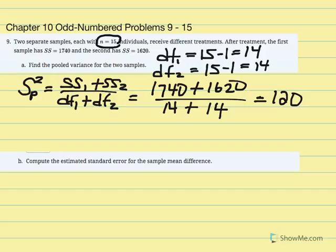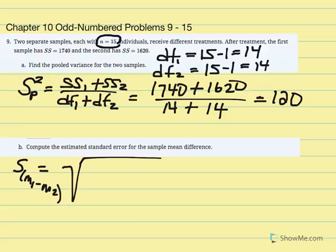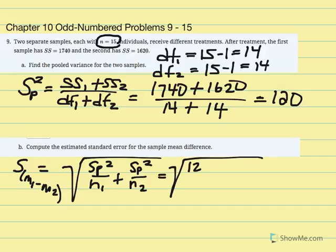Now we move on to part B, which says compute the estimated standard error of the sample mean difference. The formula is s sub m1 minus m2 equals the square root of pooled variance over n1 plus pooled variance over n2. Replacing variables: pooled variance is 120, n1 is 15, pooled variance over n2 with n2 also equal to 15.